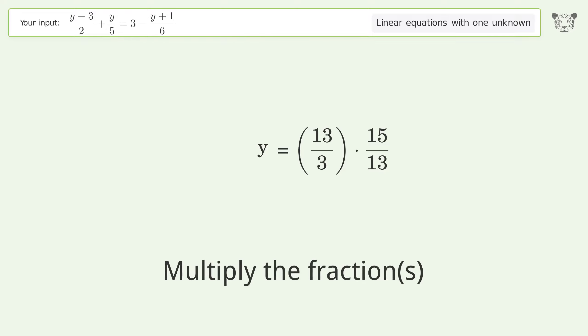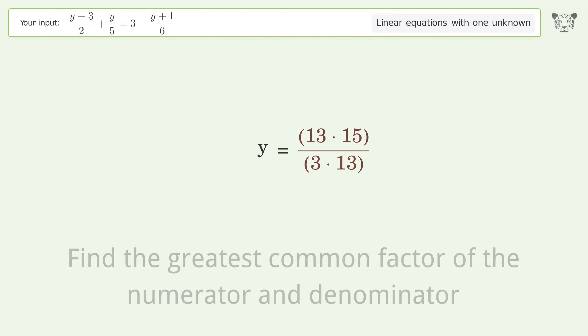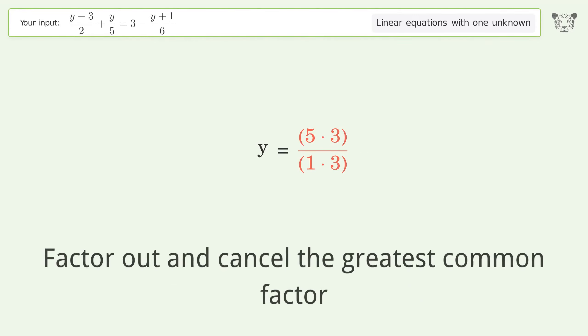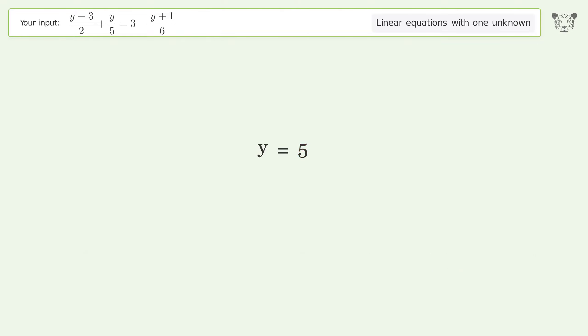Simplify the fraction. Multiply the fractions. Find the greatest common factor of the numerator and denominator, then factor out and cancel the greatest common factor. And so the final result is y equals 5.